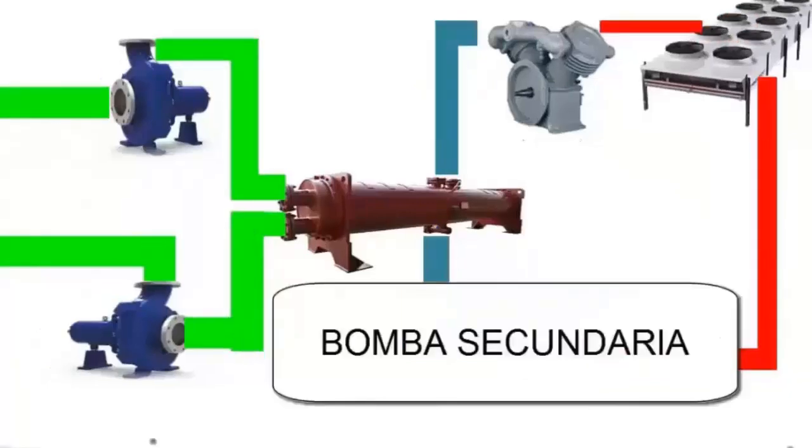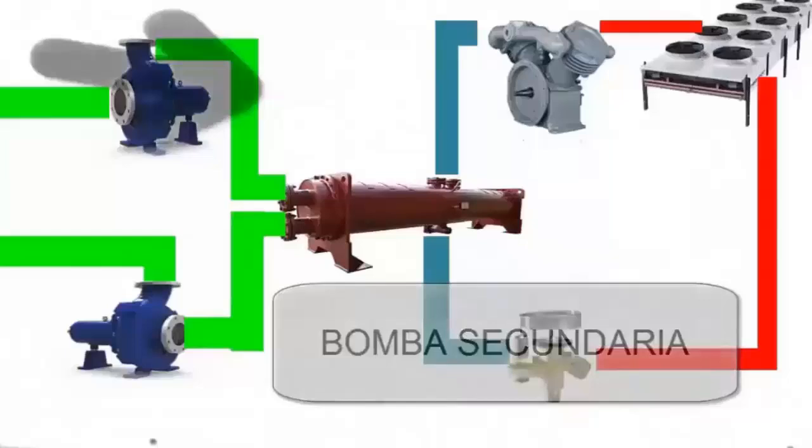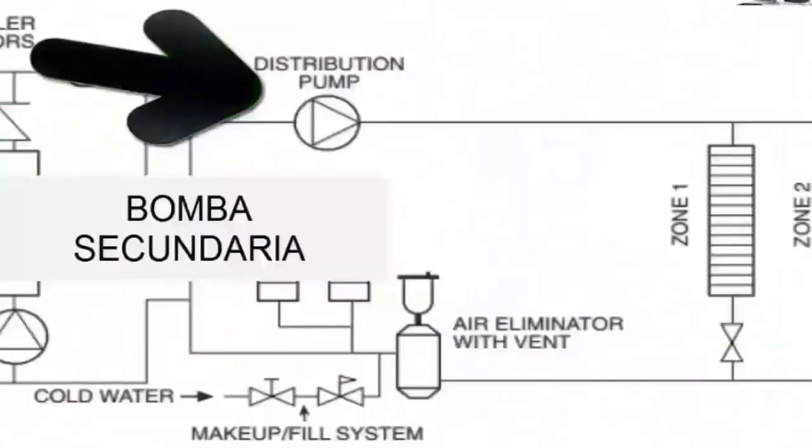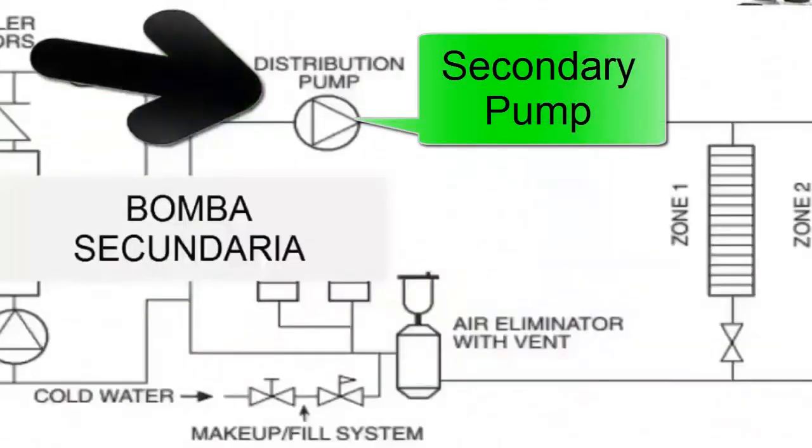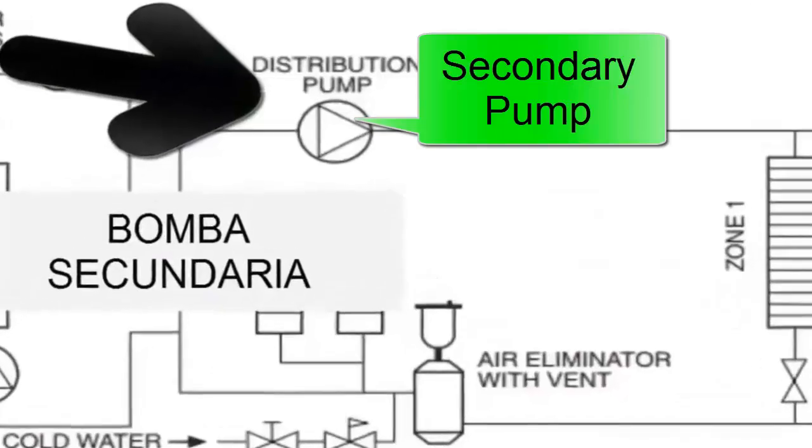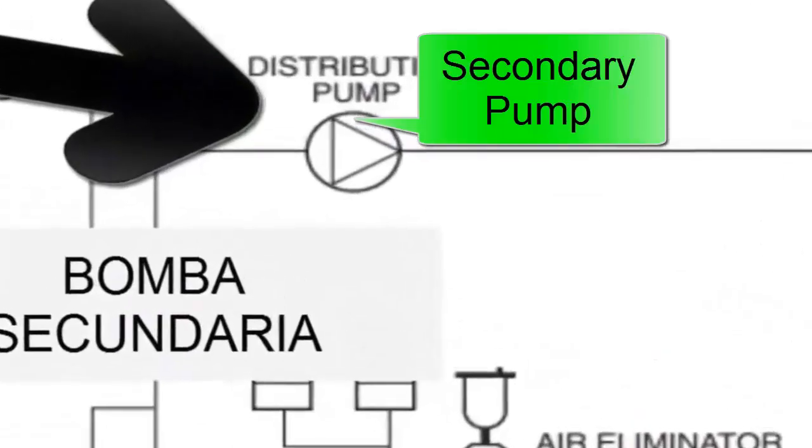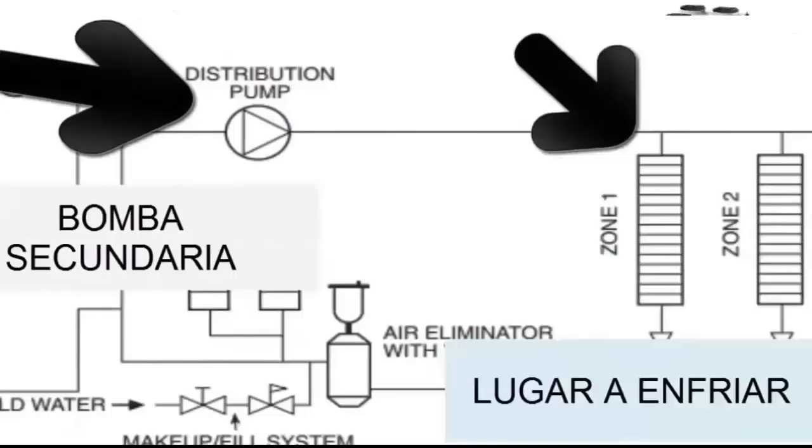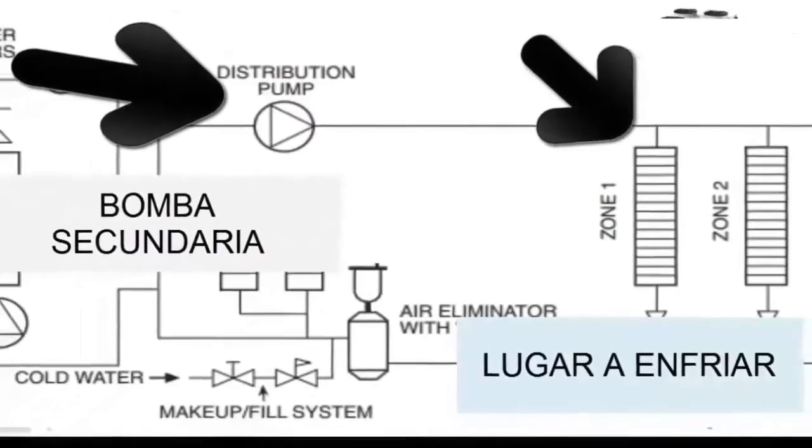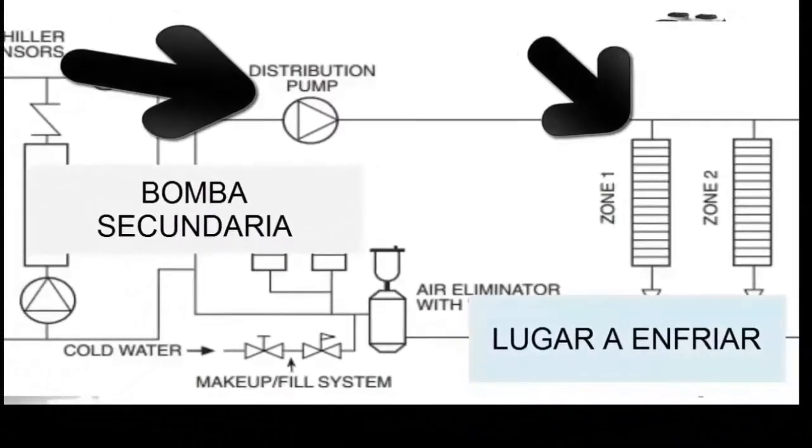The chilled water circuit is not limited to the primary pump. It also includes a secondary pump located at the bottom of the diagram. This secondary pump has an equally crucial function: transporting the already cooled water to the application point where cooling is needed.